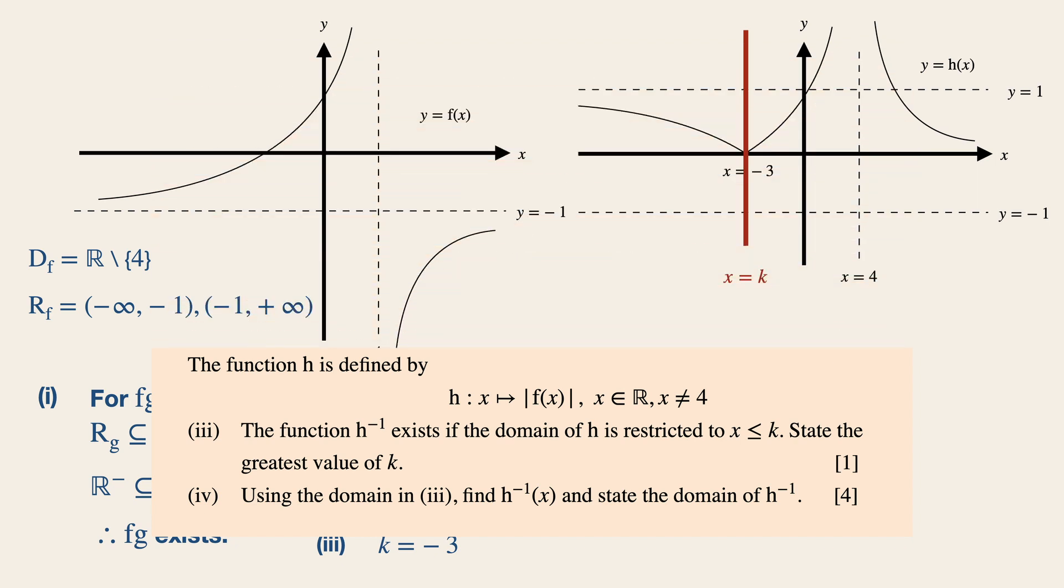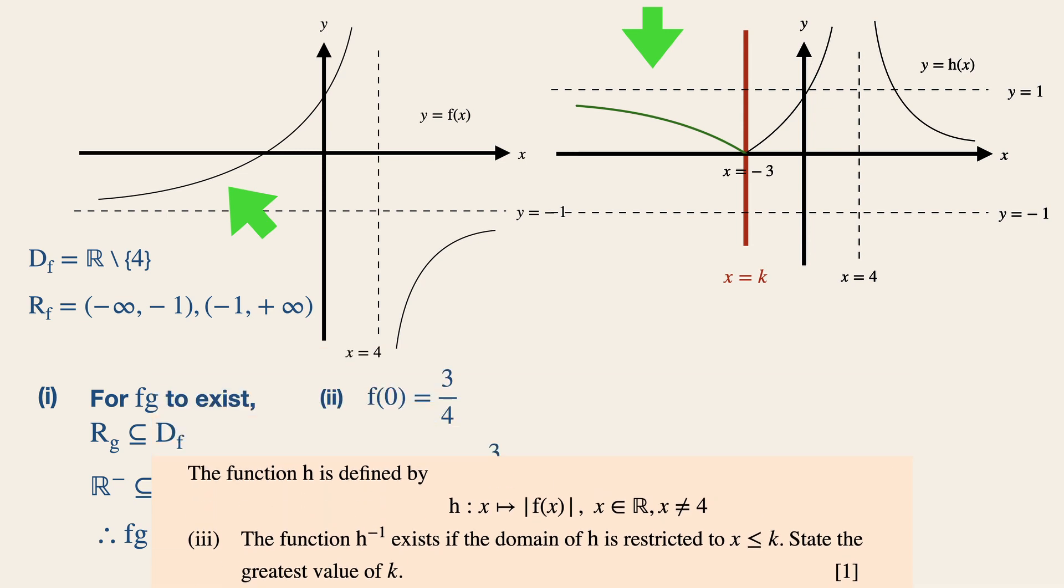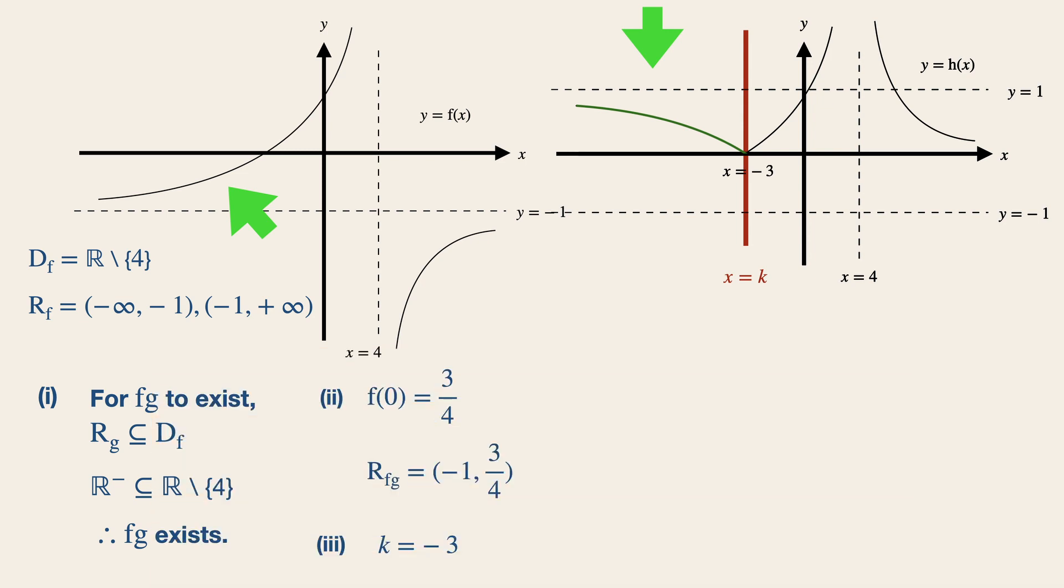For this case, we are taking the negative portion of the fx graph, because this graph here is a reflection of the original graph about the x axis. Therefore, instead of writing let y equals positive x plus 3 over 4 minus x, we are going to write let y equals negative x plus 3 over 4 minus x.